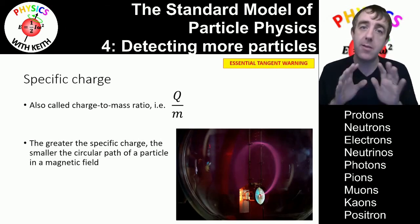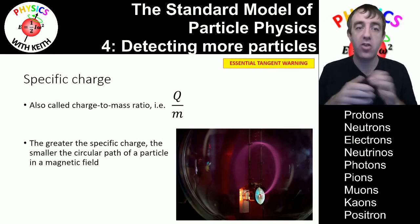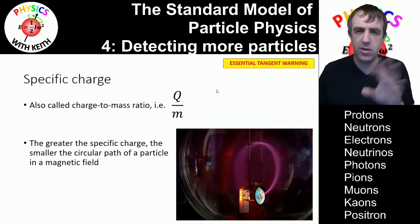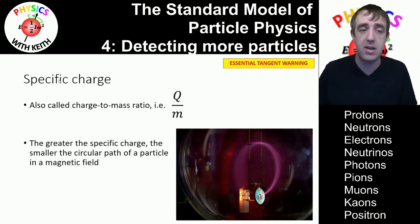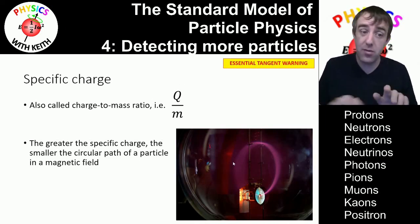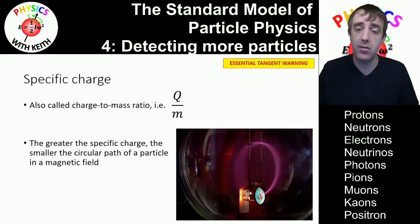Magnetic fields deflect particles according to their charge-to-mass ratio which is also called specific charge. The word specific in physics just means divided by mass. You might have heard it with terms like specific heat capacity or specific latent heat. Specific just means divided by mass. And so if a particle has a higher specific charge it will be deflected more by the magnetic field and so have a smaller circular path.